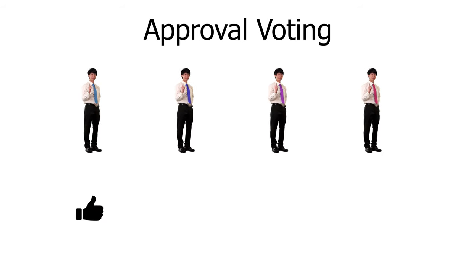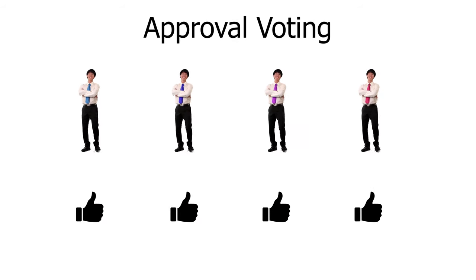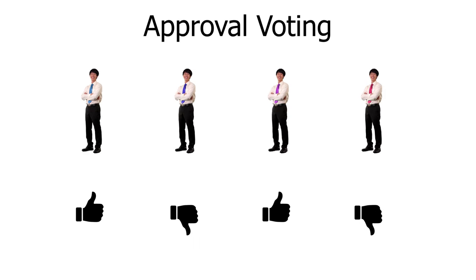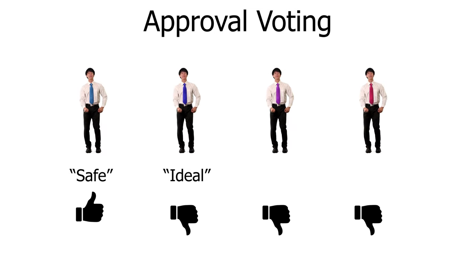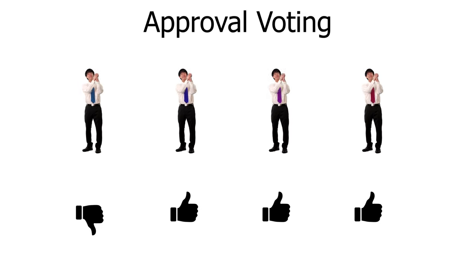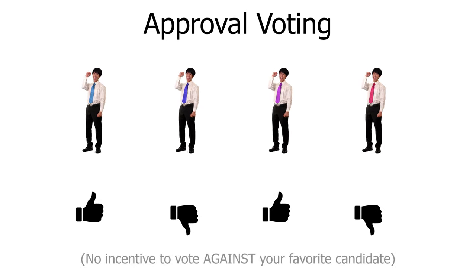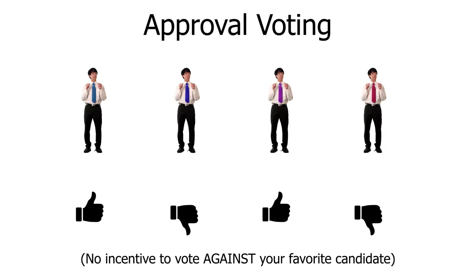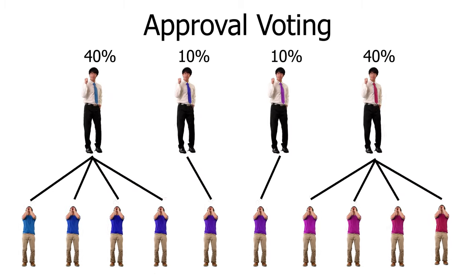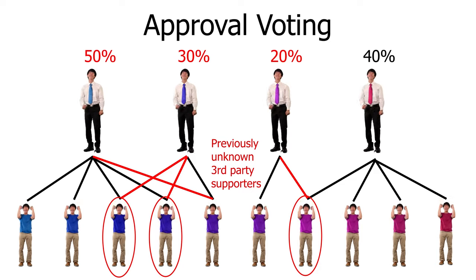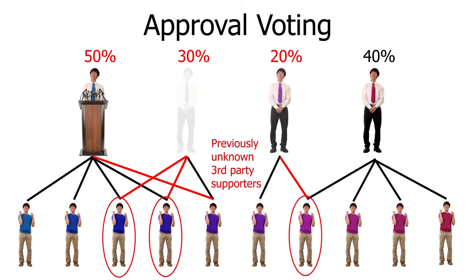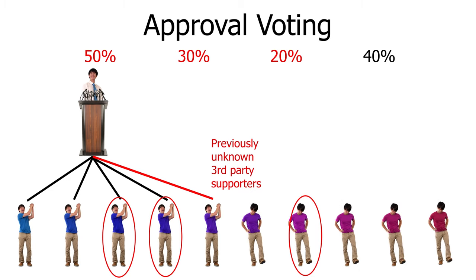Approval voting is still a single-winner voting method, but it doesn't limit you to only one choice. Instead, your vote allows you to express all the candidates you approve of. Instead of being forced to choose between an ideal candidate or a safe candidate, voters can pick them both or more without compromising. This addresses Duverger's second factor — the psychological problem of voting against your favorite — so third parties can get an accurate measure of their support. However, it only halfway addresses Duverger's Law because it is still within a winner-takes-all system with a high winning threshold and nothing for smaller parties.